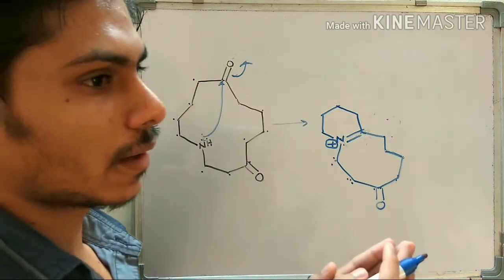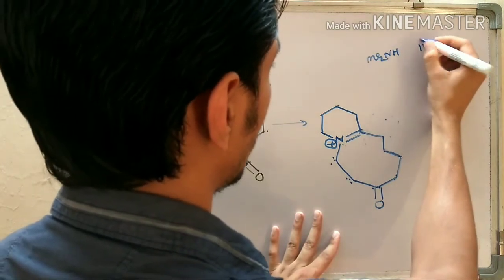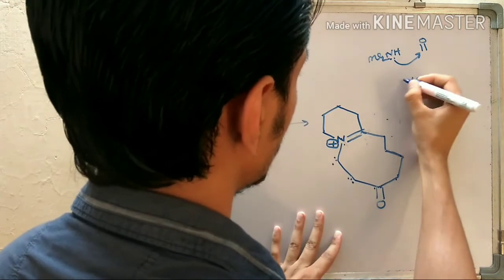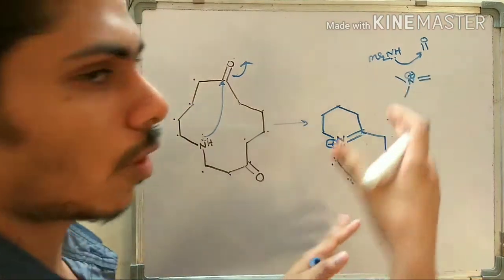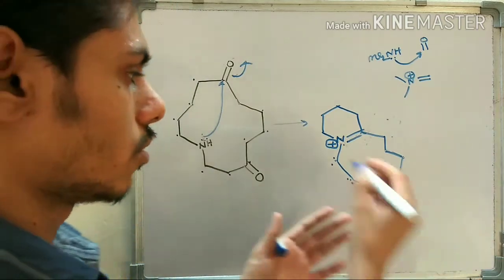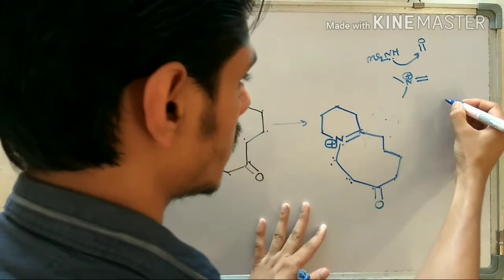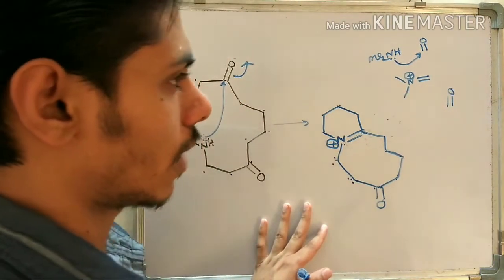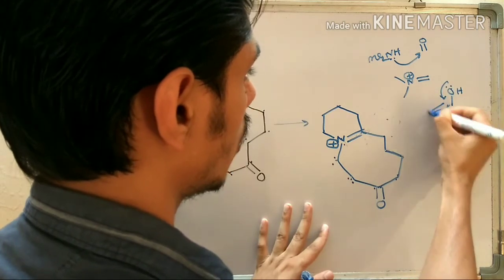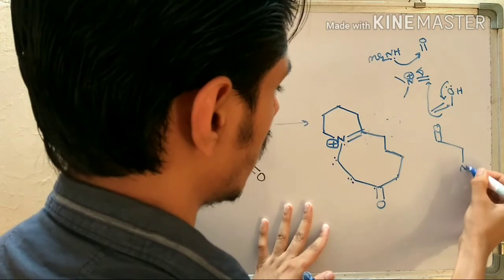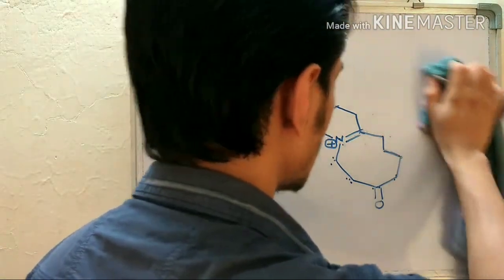Whenever you have this type of iminium ion, you should immediately remember the Mannich reaction. In the Mannich reaction, a secondary amine attacks formaldehyde to form the same type of iminium ion — where the nitrogen has a positive charge and no hydrogen to lose to form a stable neutral imine. What is more important is that in the Mannich reaction, another molecule of ketone or aldehyde undergoes enolization, and that enol attacks the iminium to introduce the aminomethyl group.